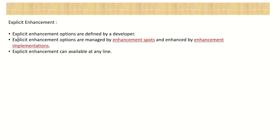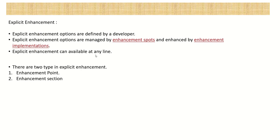The second one is the explicit enhancement. The explicit enhancement options are defined by the developer. Explicit enhancement options are managed by the enhancement spots and enhanced by the enhancement implementation. Unlike implicit enhancements which are available at fixed positions at the start or end of a program, in case of explicit enhancement they can be available at any line.